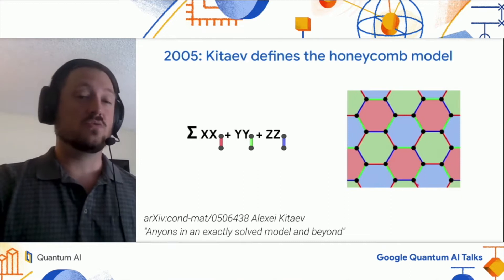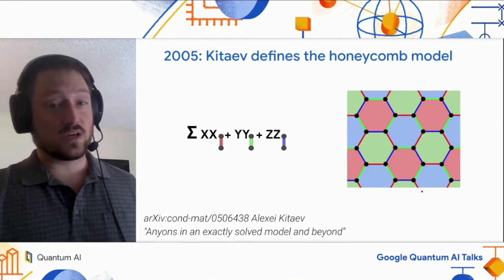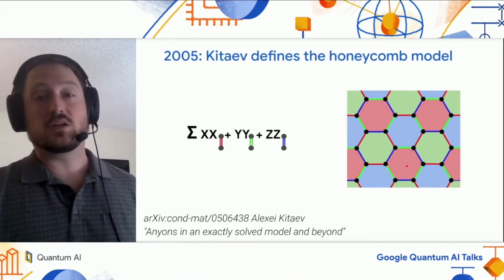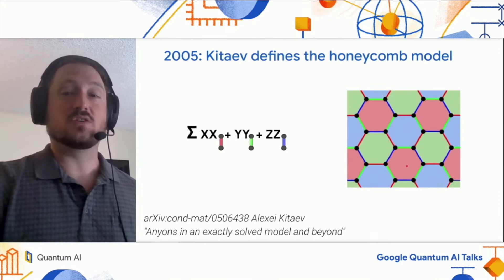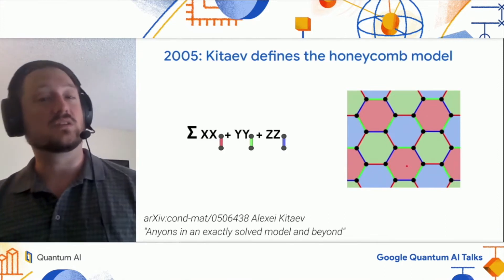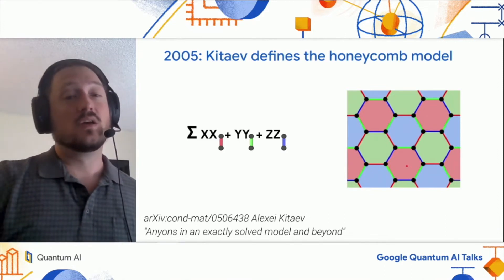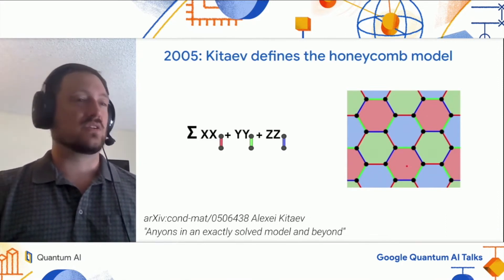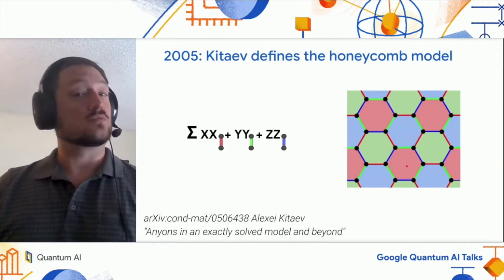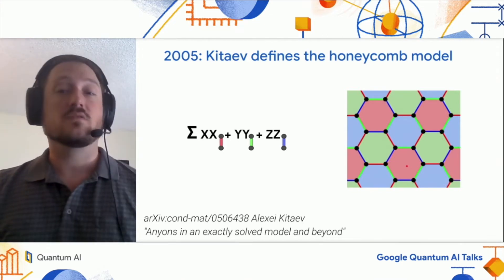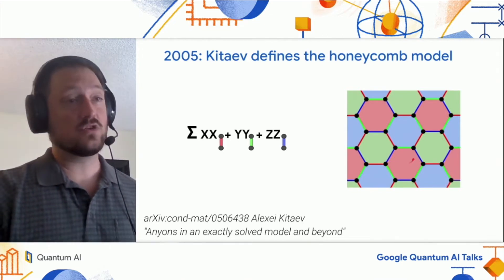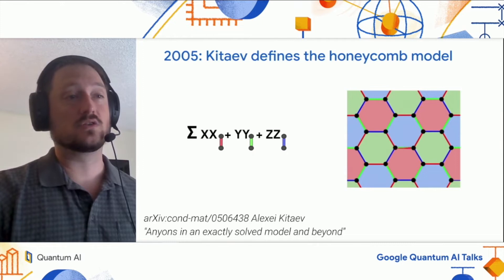Anyways, you get this pattern of edge colorings by three-coloring the faces, and then coloring each edge based on the faces it connects. When you assign the edge colors in that way, you get a lot of nice structural properties — for example, every qubit has one edge of each color.